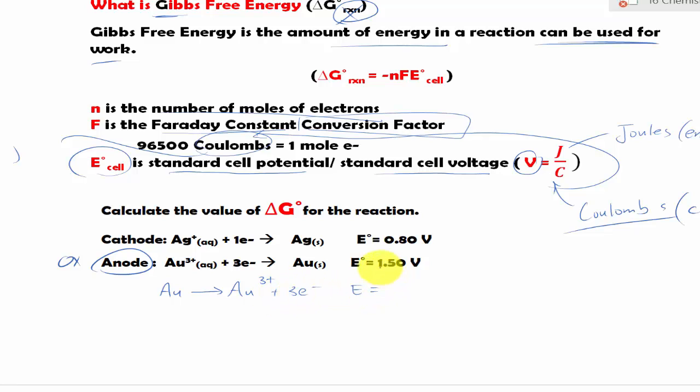And most importantly, the ΔE is now flipped, so we have -1.50 volts. So first of all, we need to know what is the number of electrons involved.